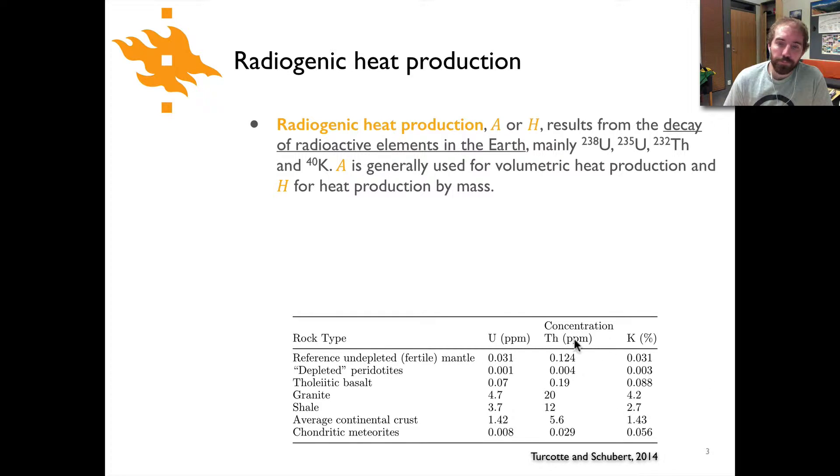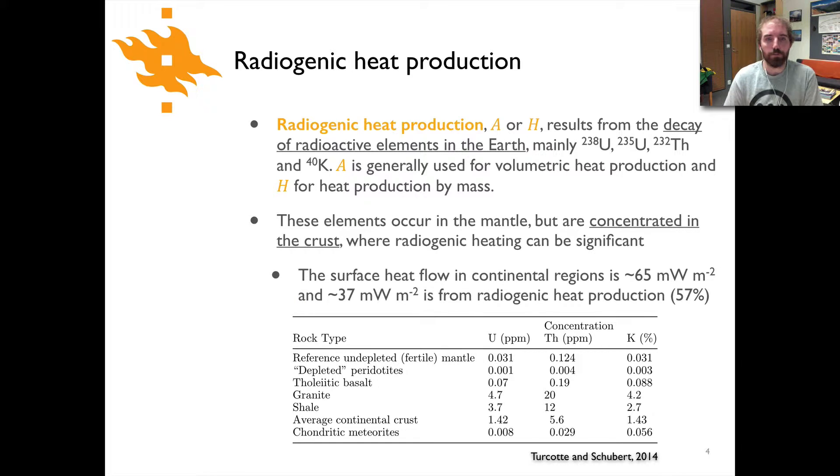You can see down here at the bottom a table of the concentrations of different radiogenic elements. Here's uranium in parts per million, thorium in parts per million, and then potassium in percent for different rock types. You can see higher uranium concentrations in granites and shales as well as potassium compared to things like basalts or depleted peridotites or much more mafic rocks. The elements do occur in the mantle but they're pretty much concentrated in the crust and that's where radiogenic heating is most significant.